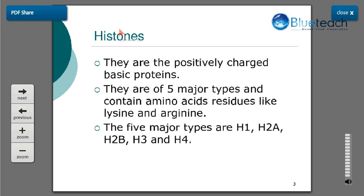In chromosomes, DNA is compactly arranged along with certain basic proteins known as histones. Histones are positively charged basic proteins. They are of 5 major types and contain basic amino acid residues like lysine and arginine. The 5 major types of histones are H1, H2A, H2B, H3, and H4.